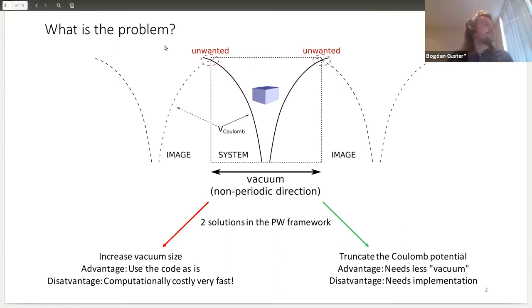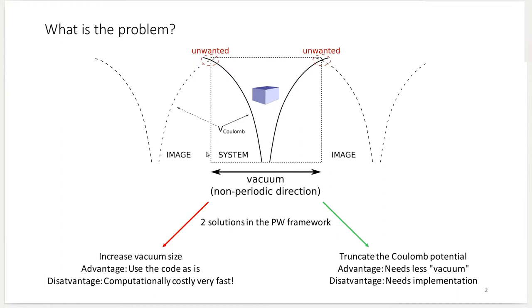The problem we're trying to tackle is that in low dimensional systems, when we try to do calculations with periodic boundary conditions, we have these unwanted interactions due to the long range character of the Coulomb potential.